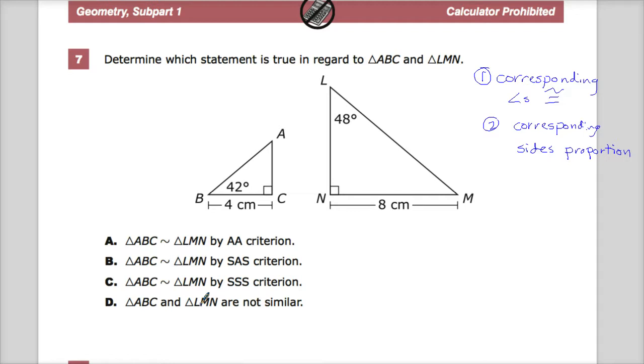Side, side, side indicates that the sides are all proportional. I don't have enough information to tell you anything about that. I don't know what the length of LM is, I don't know what AB is, so I can go ahead and say it's not that, because I can't tell you.